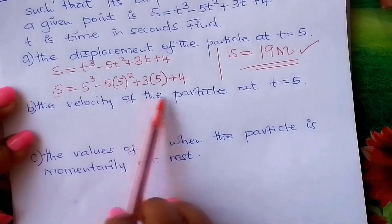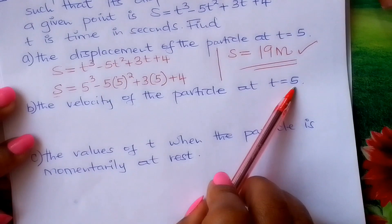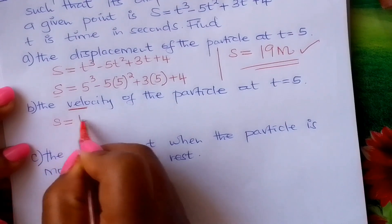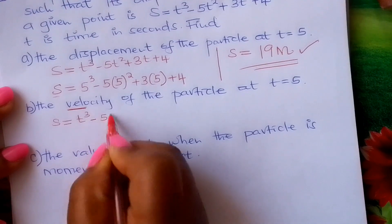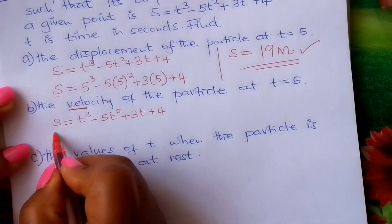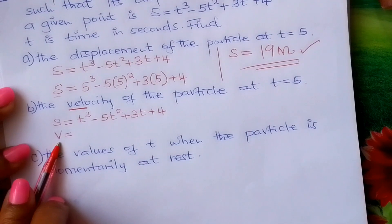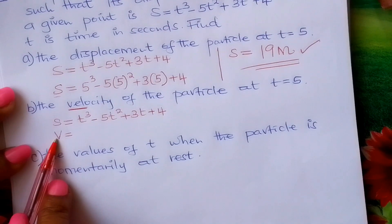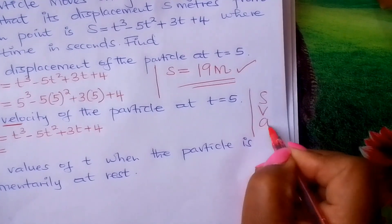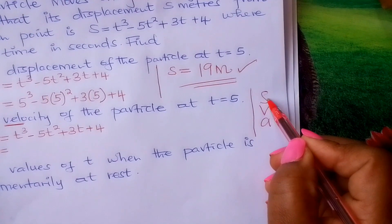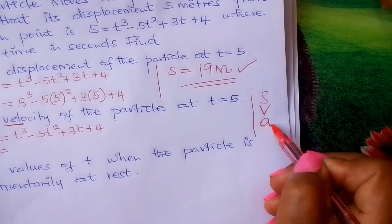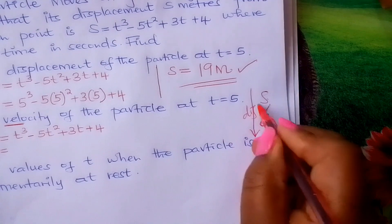Find the velocity of the particle at t equals 5. You are given the expression for s: s equals t cubed minus 5t squared plus 3t plus 4. To get v from s, you differentiate. Remember those kinematics: s, v, a. If you have s and want to get v, you differentiate. If you have v to go to a for acceleration, you differentiate. As you go down, we talk of differentiation.